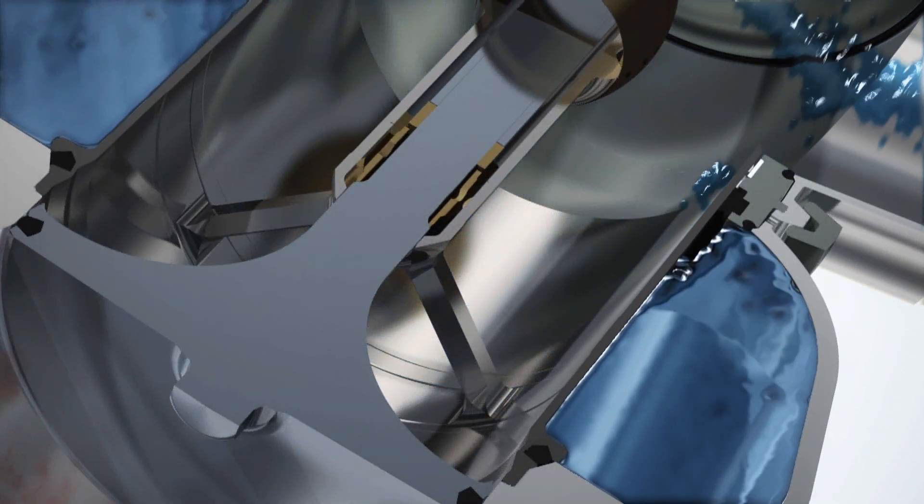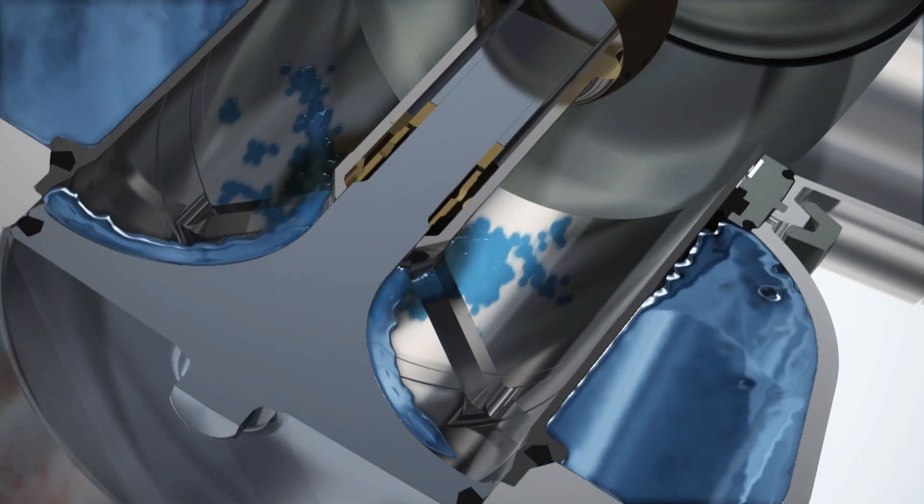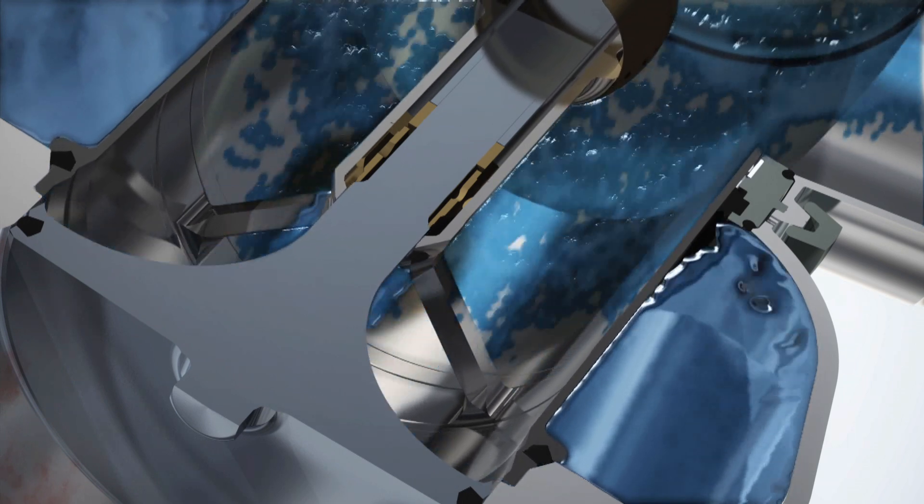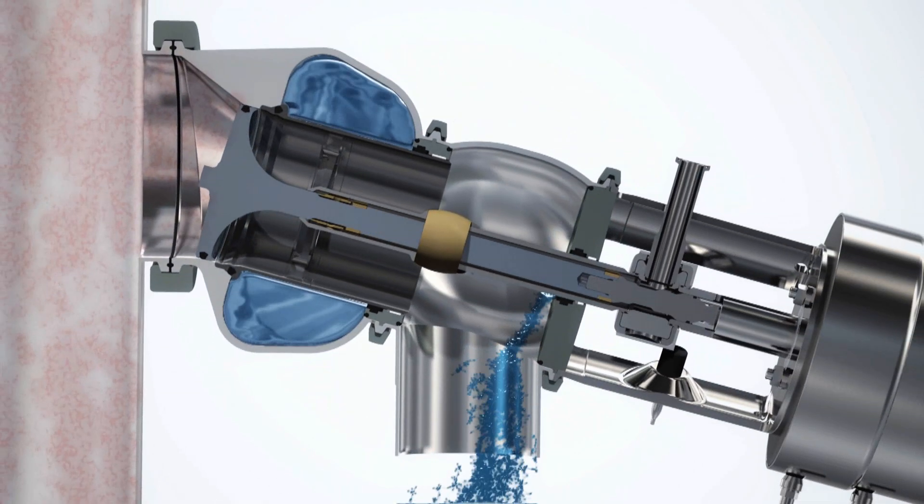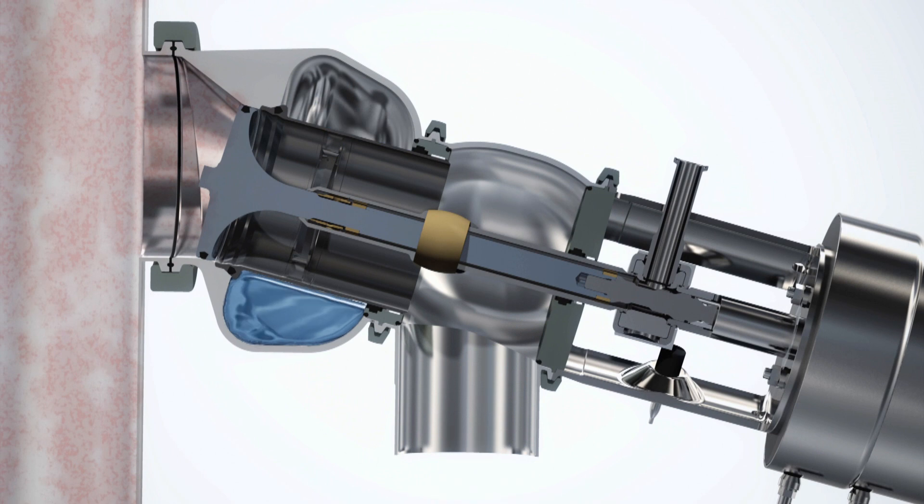While CIP fluid is in the process pipe, a seat lift of the balanced upper plug enables fast and efficient cleaning of the seat and its contact point using minimal CIP fluid.